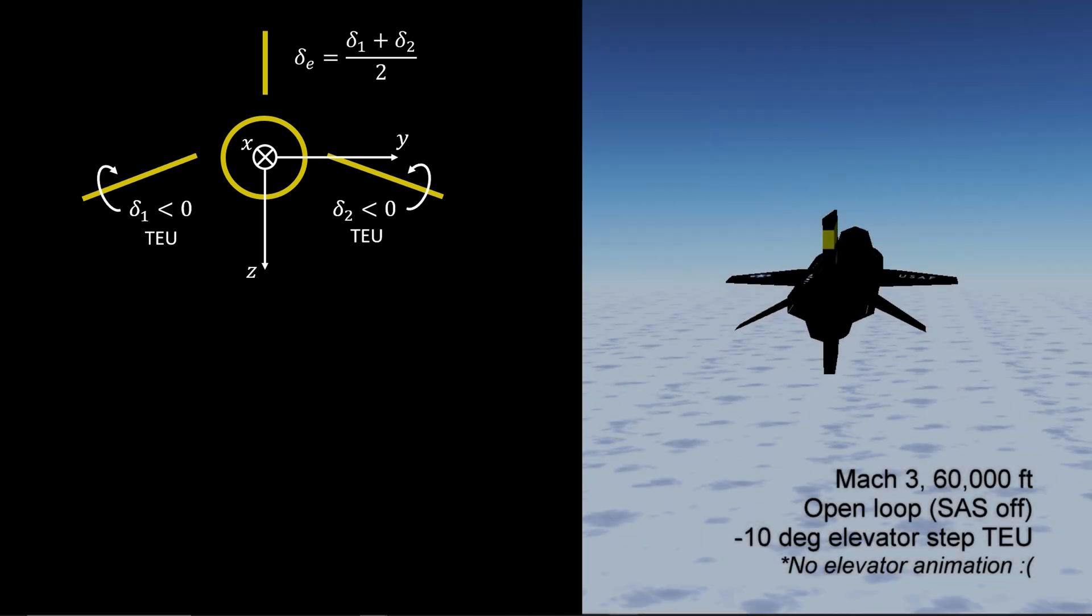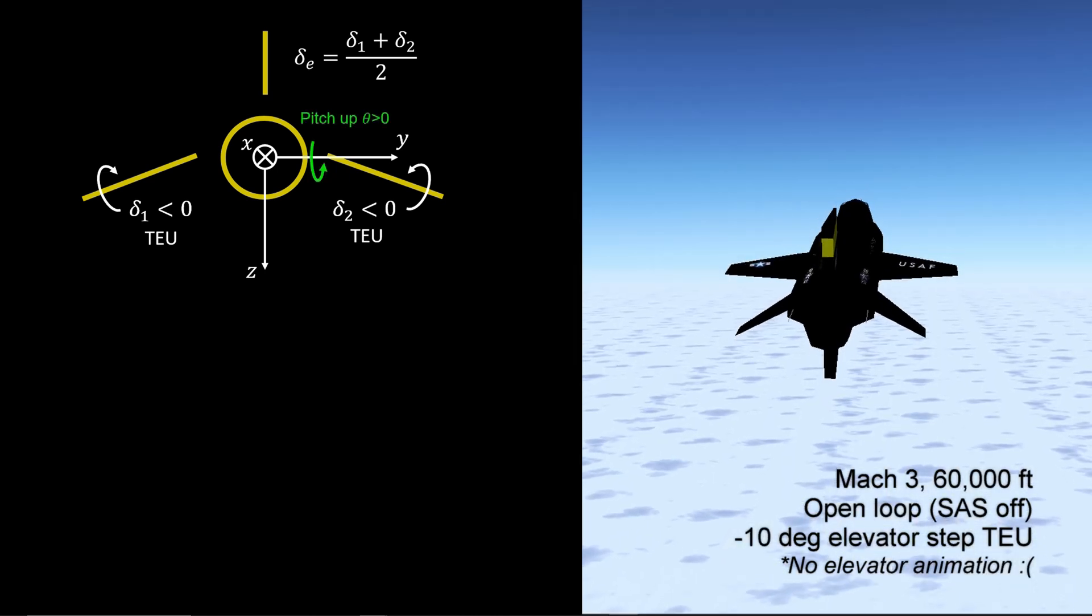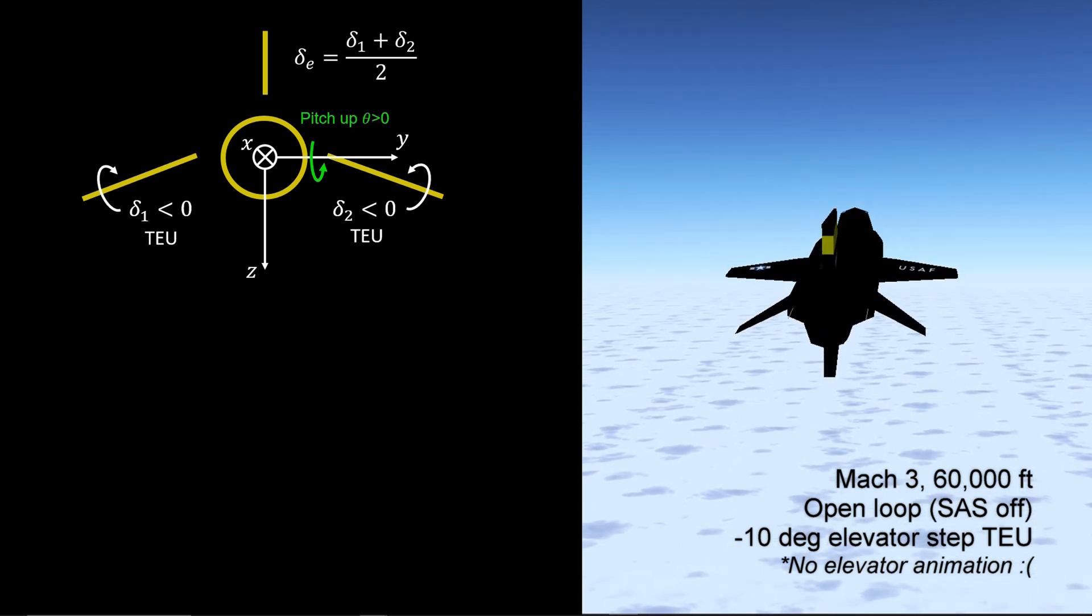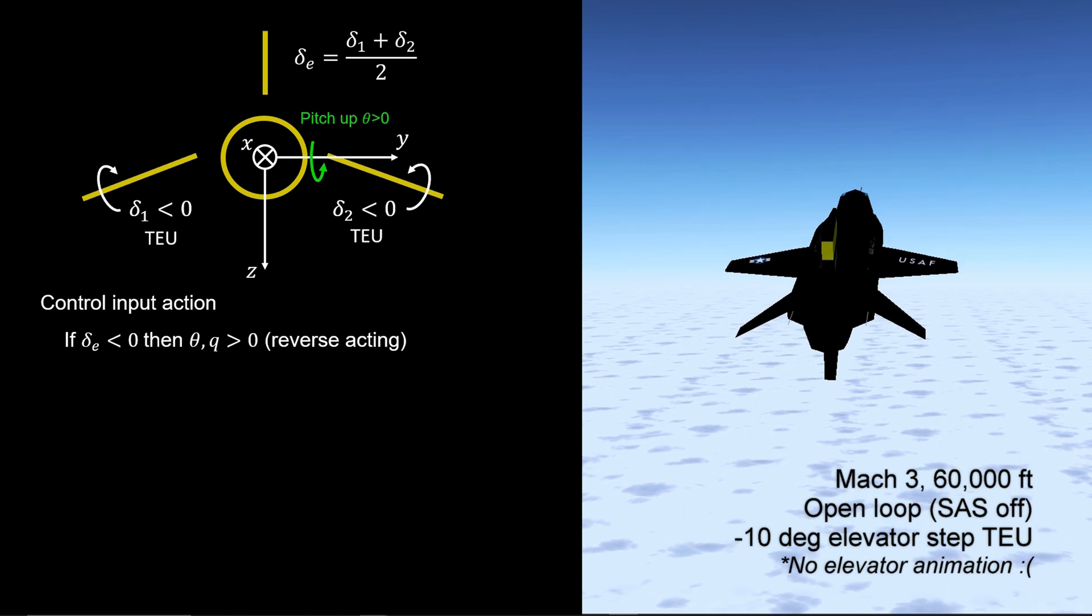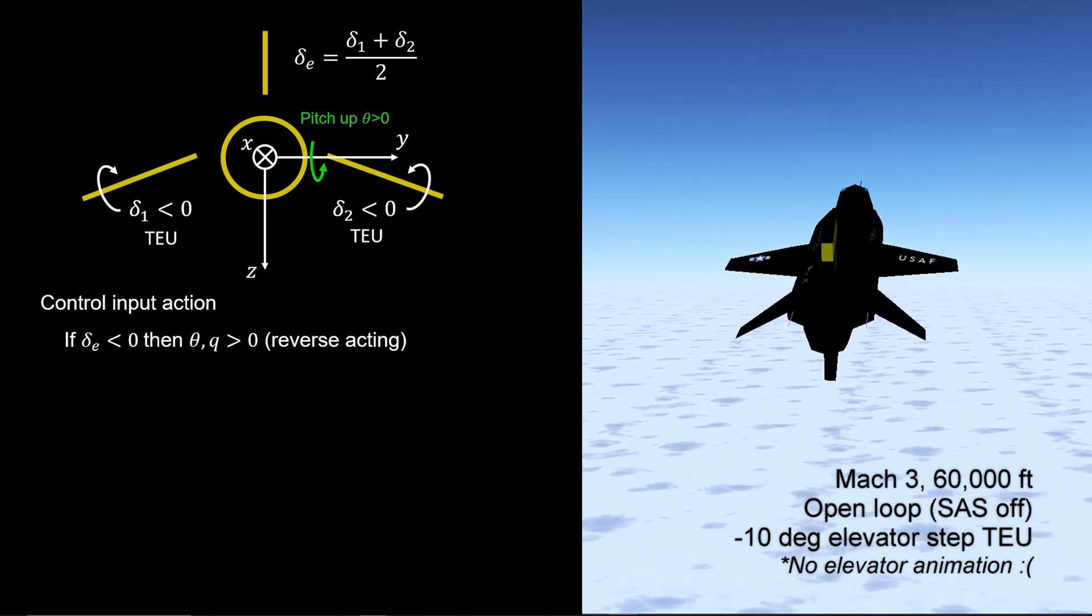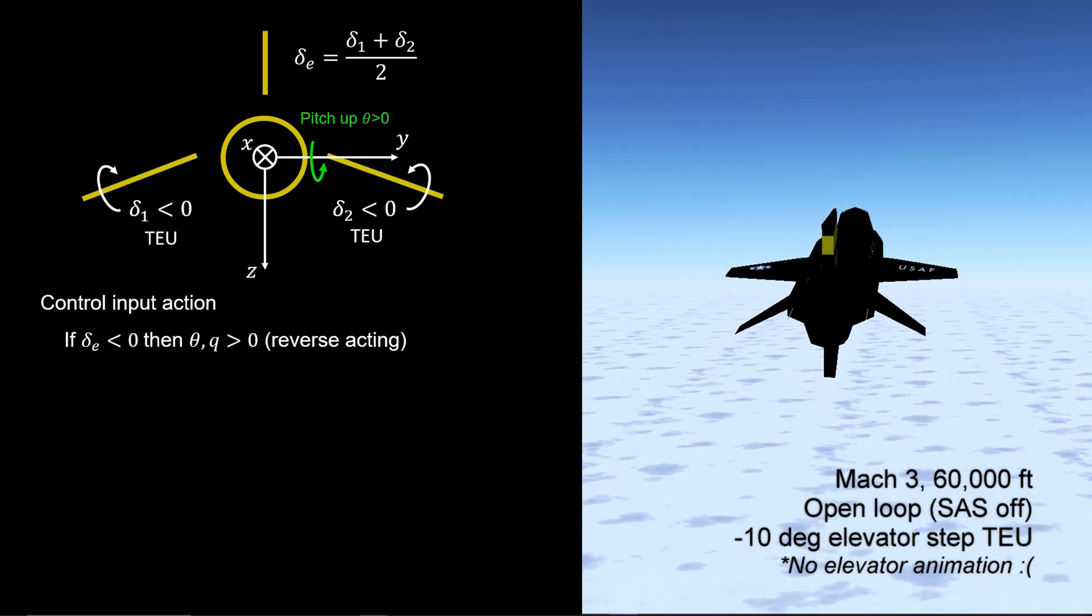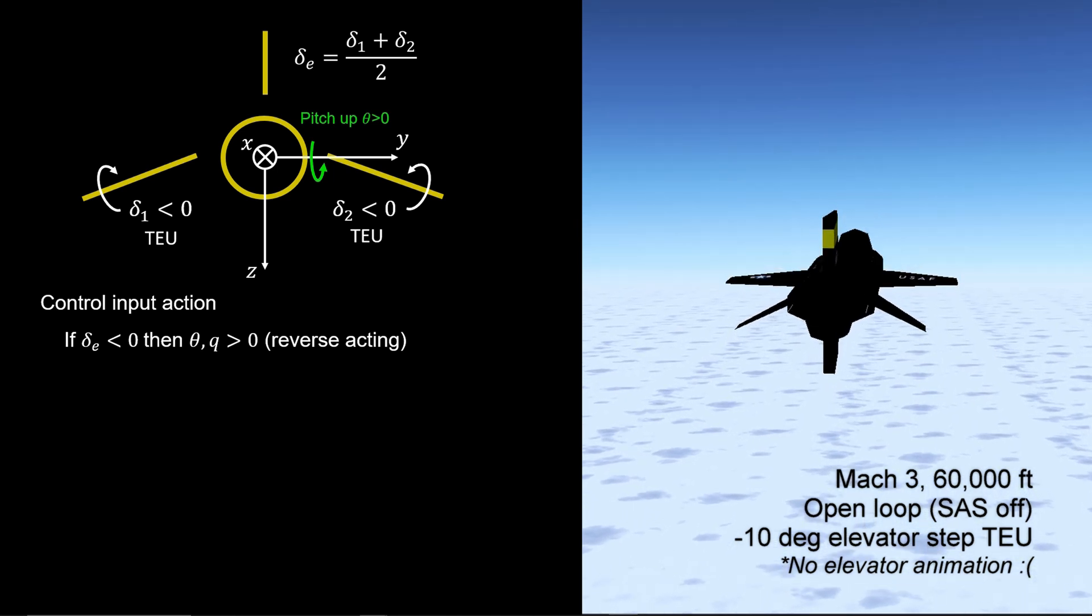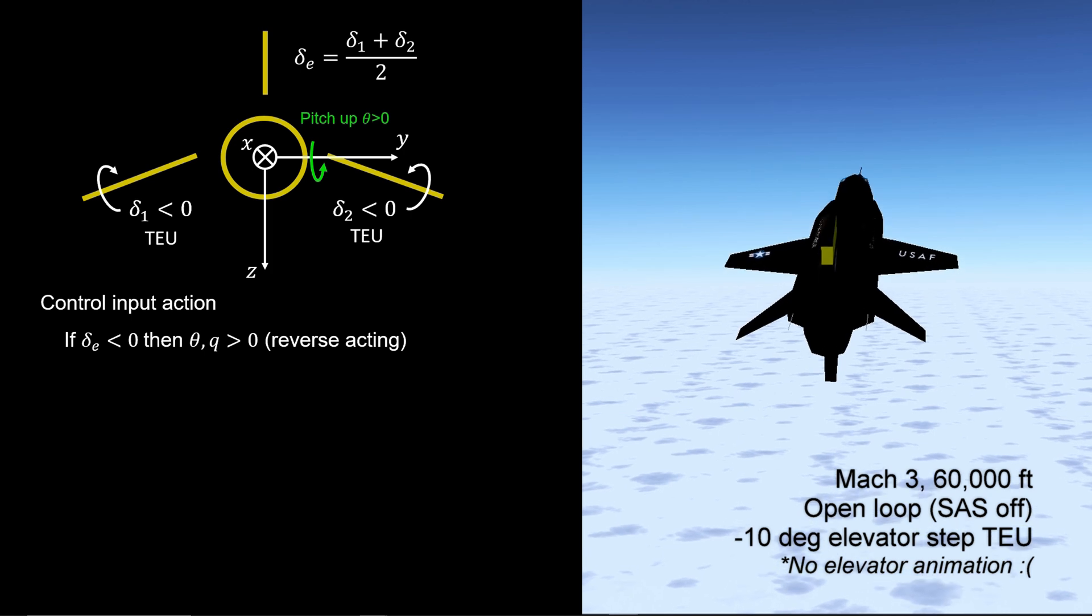The effect on the aircraft is positive pitch up of the fuselage. In summary, if the elevator is negative, pitch angle and pitch rate are positive. We'll refer to this as reverse acting control, and it'll be important to determine the sign of the SAS feedback gain.